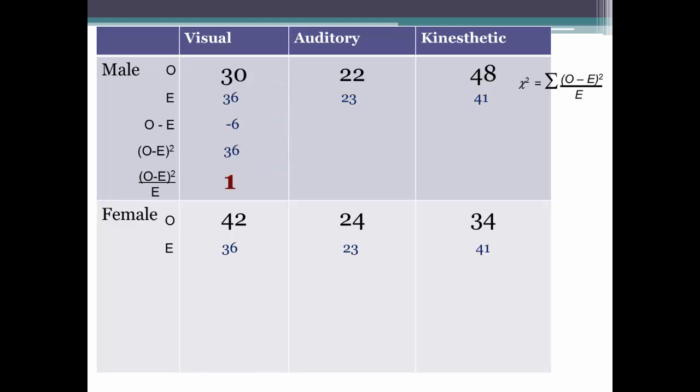Do the same for the next cell, male auditory learners. Observed, 22, minus the expected, which you calculated at 23, is negative 1. Square that, and you get 1. Take that number, 1, and divide it by the expected, 23, and you'll get 0.04.